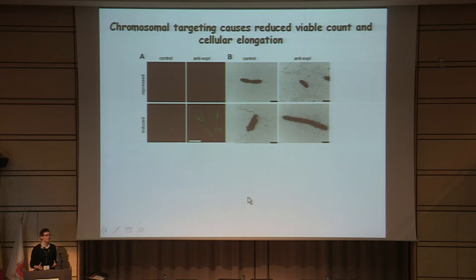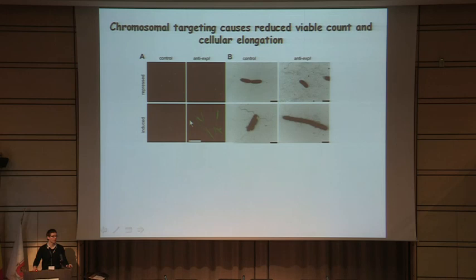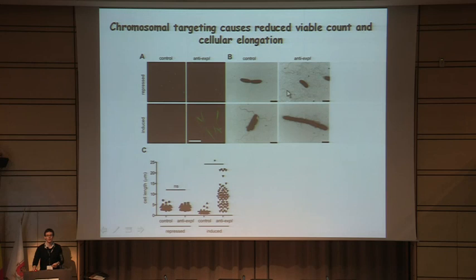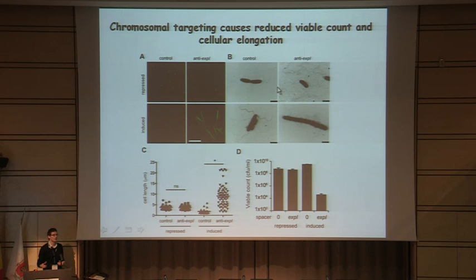We were interested to know what's happening to cells when they're being targeted. We carried out live-dead staining and observed highly elongated cells upon chromosomal targeting — highly reminiscent of DNA damage and the SOS stress response. This was confirmed by electron microscopy, with cells reaching up to 20 or 25 microns in length. Furthermore, this is a non-reversible effect: we see a five-order-of-magnitude reduction in viable count upon chromosomal targeting, showing quite severe effects on the cells.